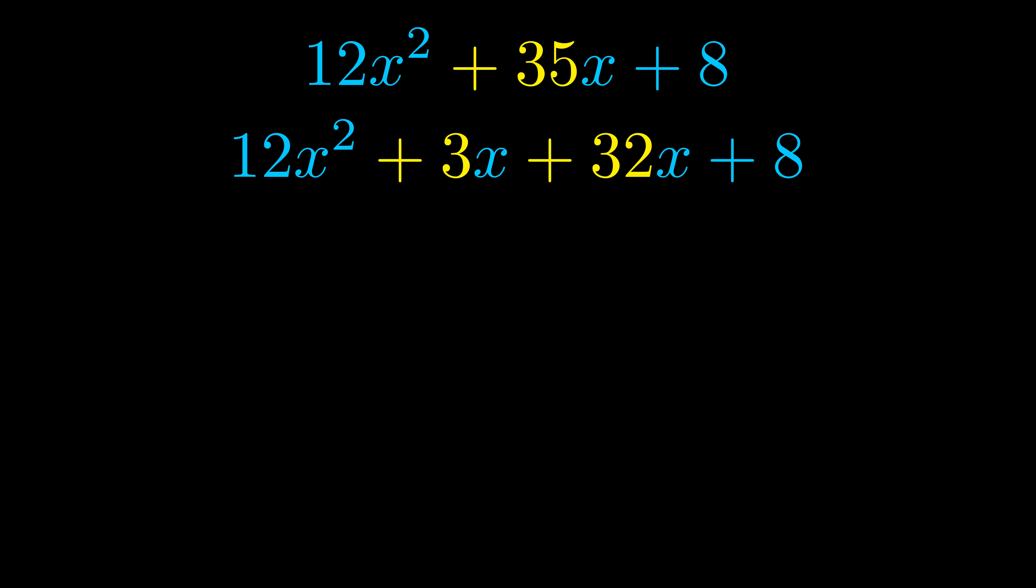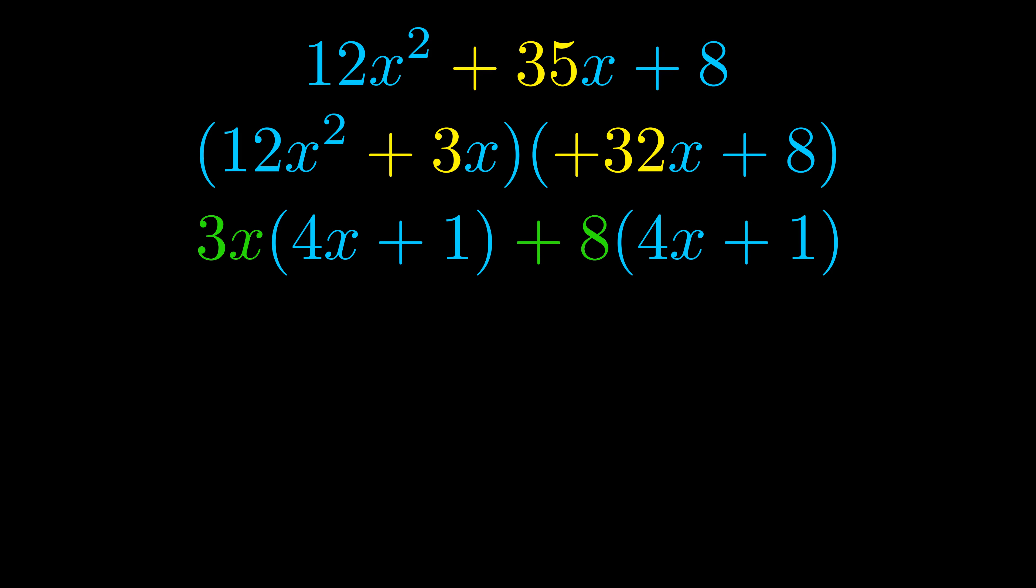Once we've done this we go ahead and we put parentheses around the first term and the last term and we do that so that we can take the greatest common factor out of both terms. We can see the greatest common factor is now outside in green.